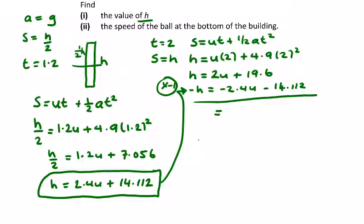So we're going to get, we have a zero on the left, but if I bring the minus 2.4 over, 0.4u to the left, that will be equal to 19.6 minus 14.112, which is 5.488.